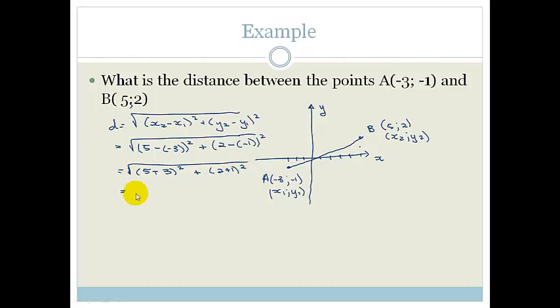So then that becomes the square root of 5 plus 3 is 8 squared, plus 3, 2 plus 1 is 3 squared, 8 squared is 64, plus 3 squared, which is 9. So this is the square root of 73, and you actually don't need to simplify that any further. So that would be the distance between points A and B.